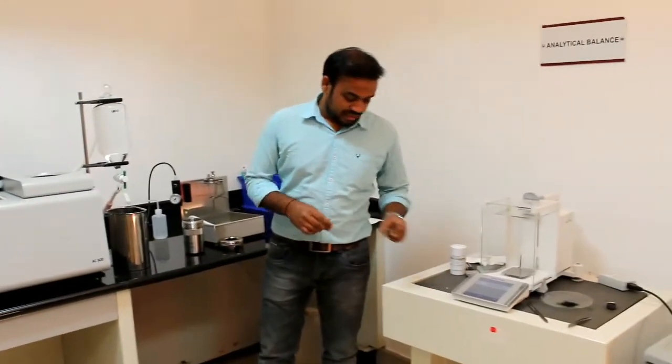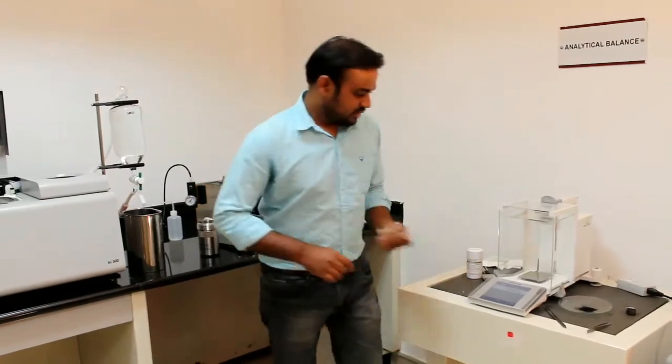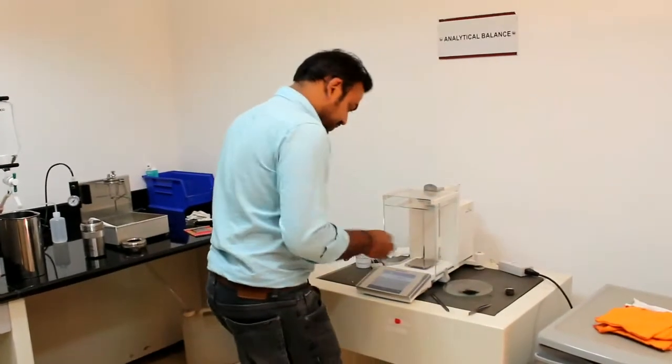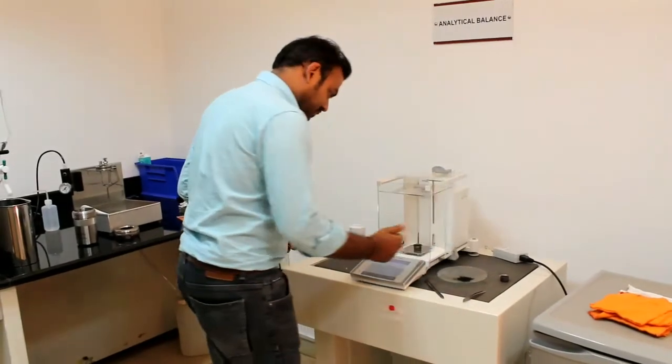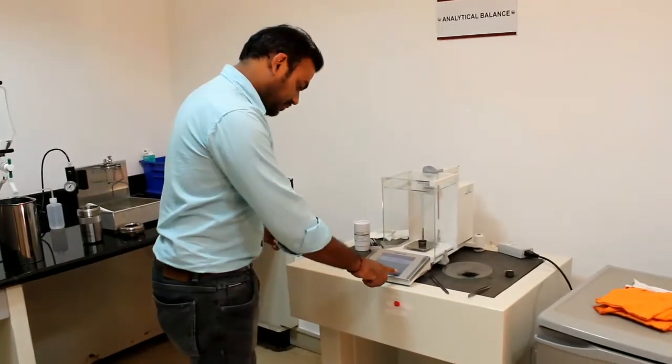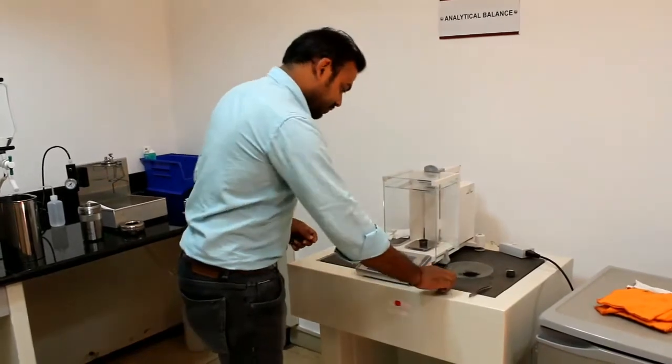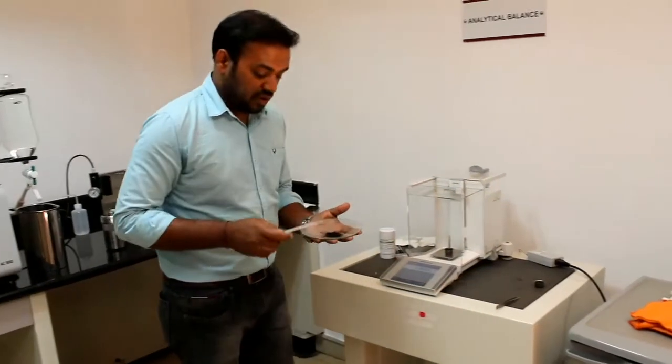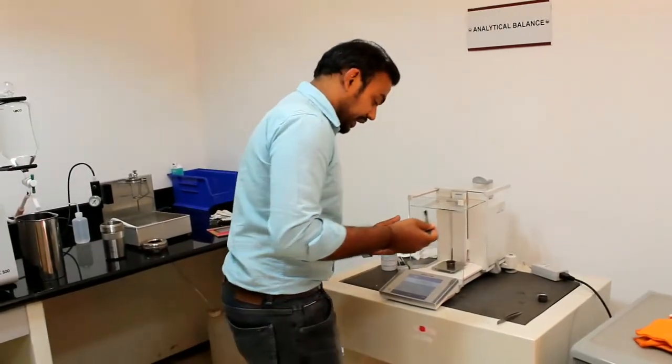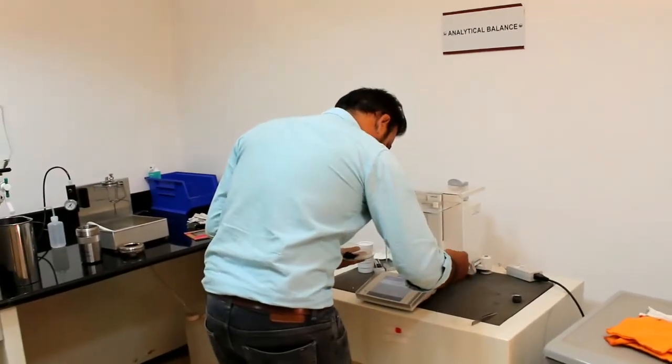Initially, we will take the sample in this crucible. First, we will weigh the sample. We will tare it now. So we are doing a coal sample. We will take approximately around 1 gram.